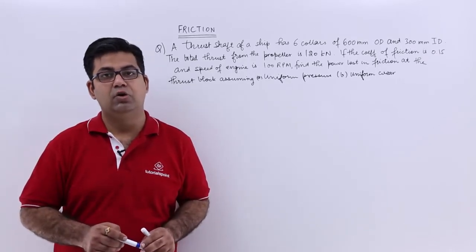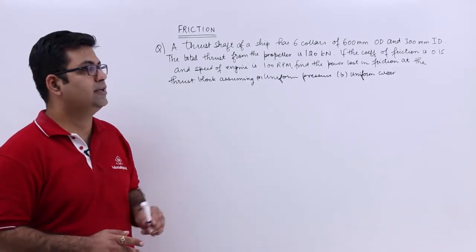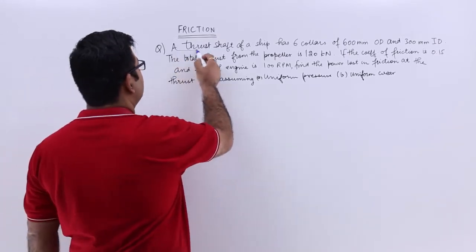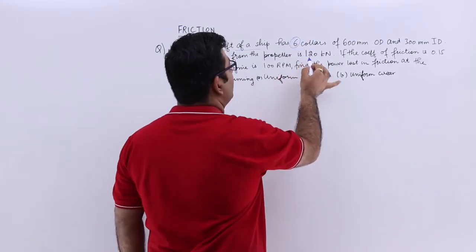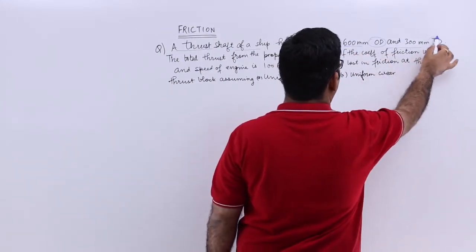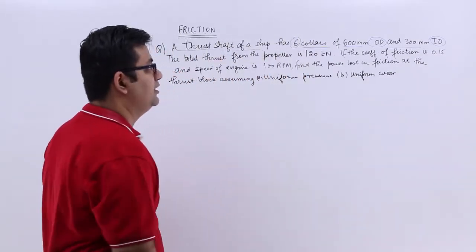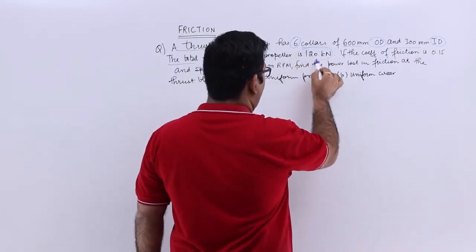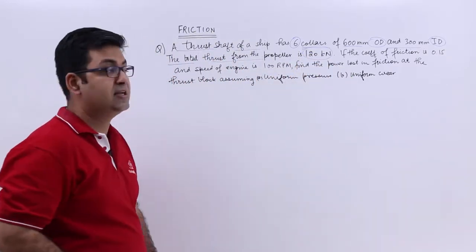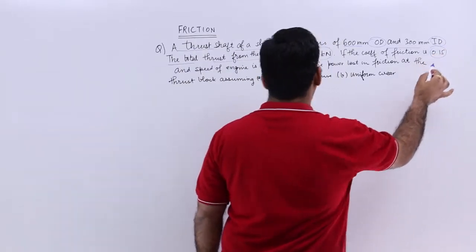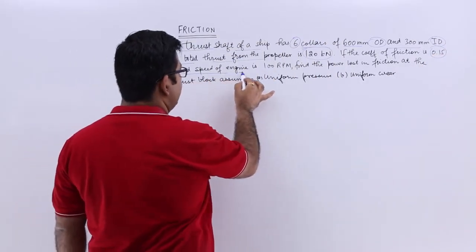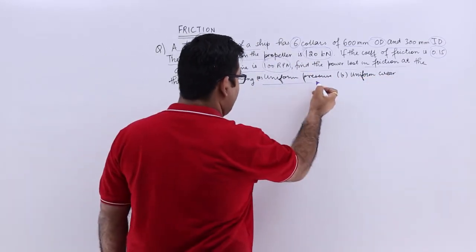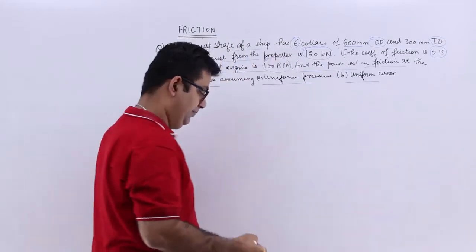Now let's look at the last video on the topic of friction, and this is another question on flat pivot bearing. The question says a thrust shaft of a ship has 6 collars of 600 mm OD and 300 mm ID. The total thrust from the propeller is 120 kN. If the coefficient of friction is 0.15 and the speed of engine is 100 rpm, find the power lost in friction at thrust block assuming uniform pressure and uniform wear.